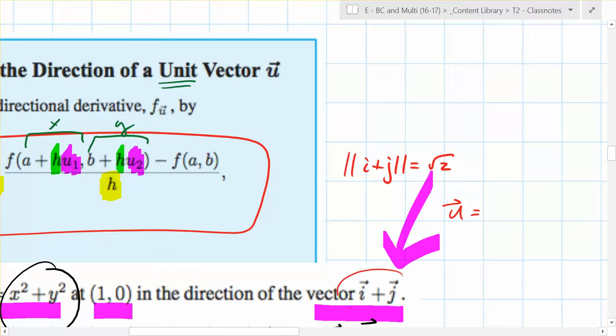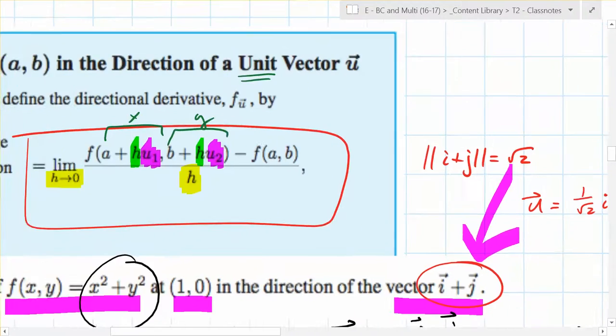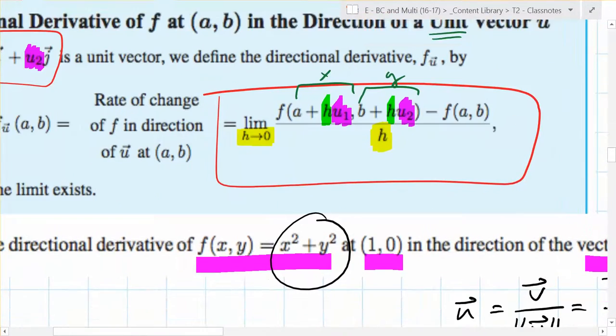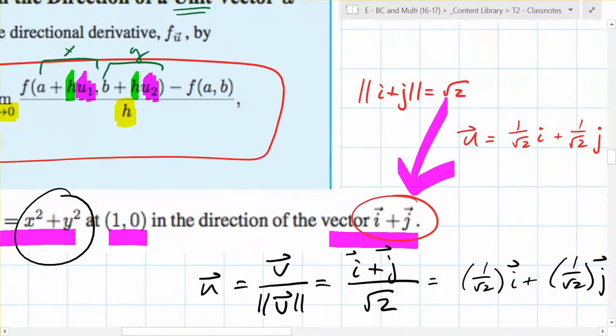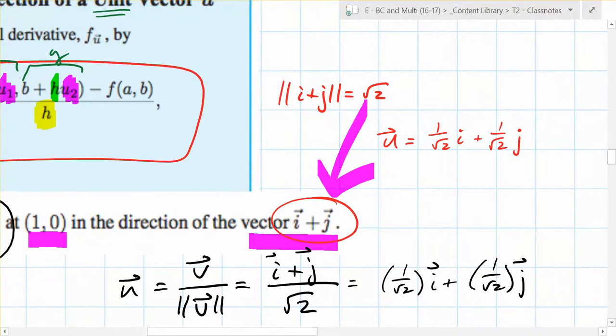You take this vector and what do you divide it by? The magnitude of root 2. So the new vector is going to be 1 over root 2, i, plus 1 over root 2, j. So if we use this definition right here, did we agree with what's right here? Is that the same thing? It is the same thing. We okay so far?